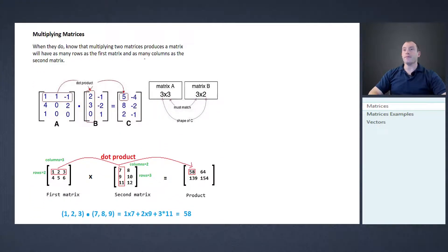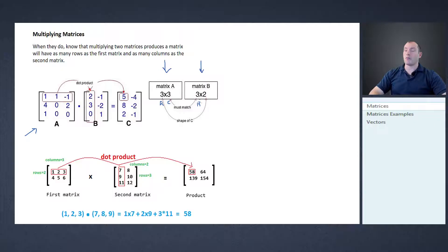Now let's talk about multiplying matrices, which is a bit more difficult. Matrix A here is a three by three — three rows and three columns. Matrix B is a three by two — three rows and two columns. To find out if we can multiply two matrices together, we take the number of columns in the first matrix and the number of rows in the second matrix. If those two numbers are the same, we can multiply them.